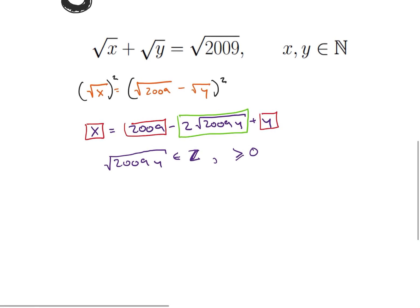Well, first let's look at 2009. So 2009, it looks like we can divide 7 into here, so that's equal to 7 times 287. And then it looks like we can get another 7, so there's going to be 7 squared times 41. So 2009 is equal to 7 squared times 41.